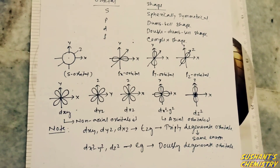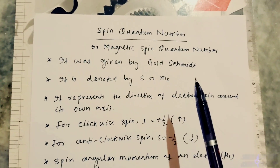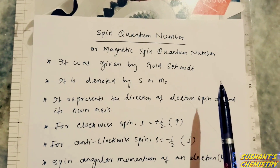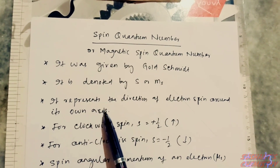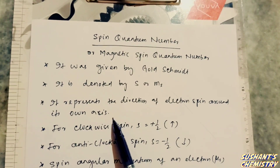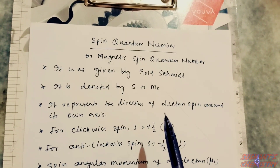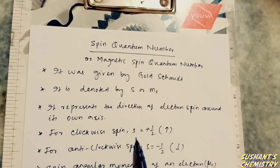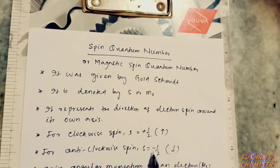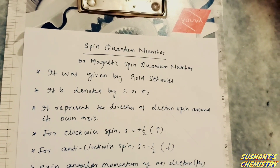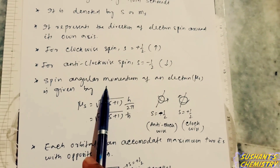Now we start the spin quantum number, also known as the magnetic spin quantum number. It was given by Goudsmit and Uhlenbeck. It is denoted by s or ms and represents the direction of electron spin around its own axis. Not only does the electron revolve around the nucleus, but it also spins around its own axis. For clockwise spin, s equals plus half (upward arrow); for anti-clockwise spin, s equals minus half (downward arrow).